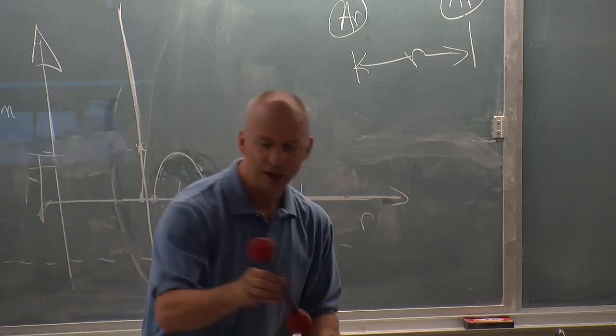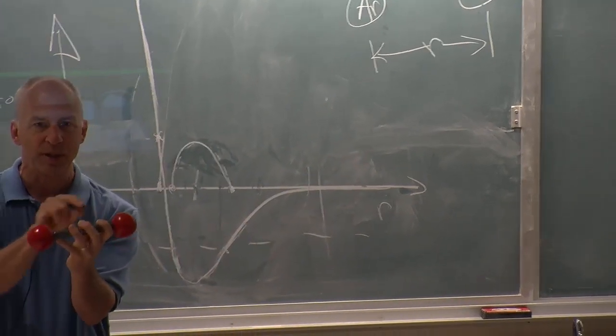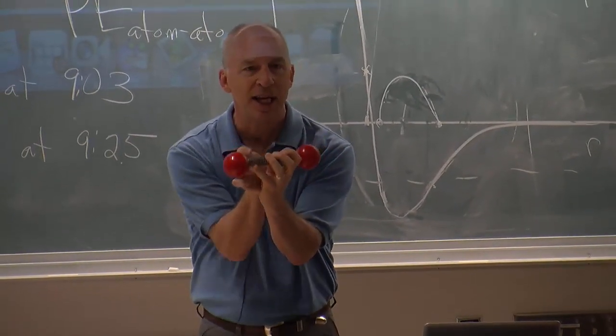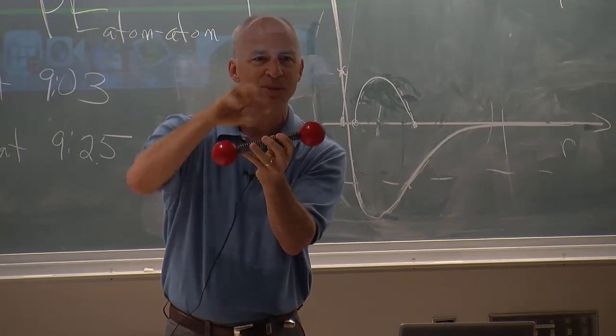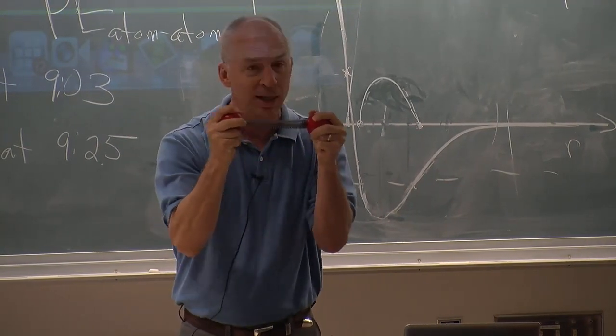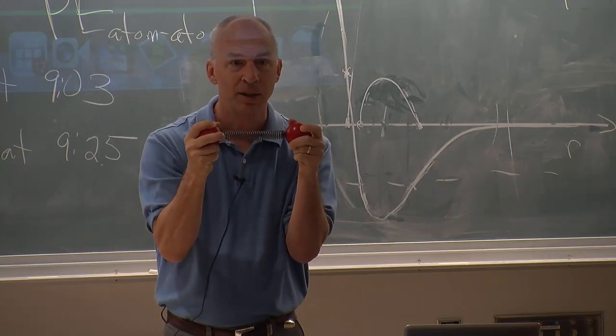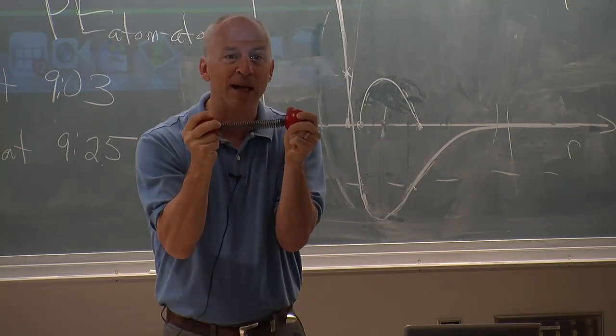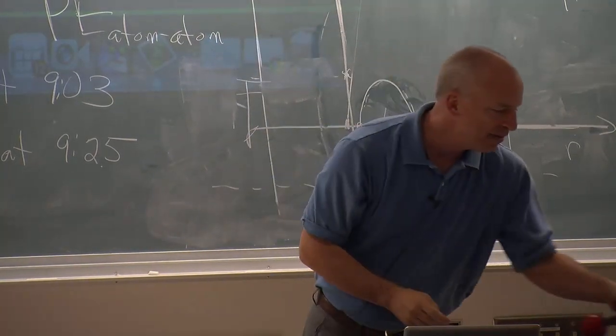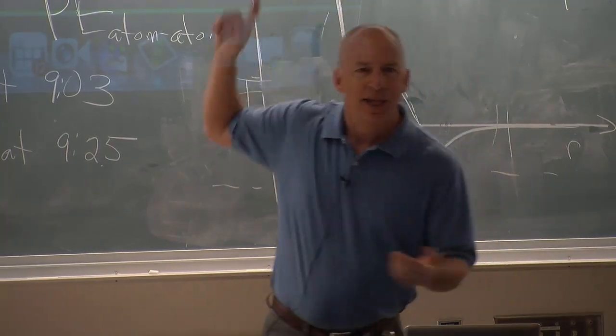So one model of molecules is when you put sticks between balls so the atoms and the bonds are represented by sticks. A better model is a spring model because now the atoms can move back and forth. And even better than that would be Lennard-Jones potential.